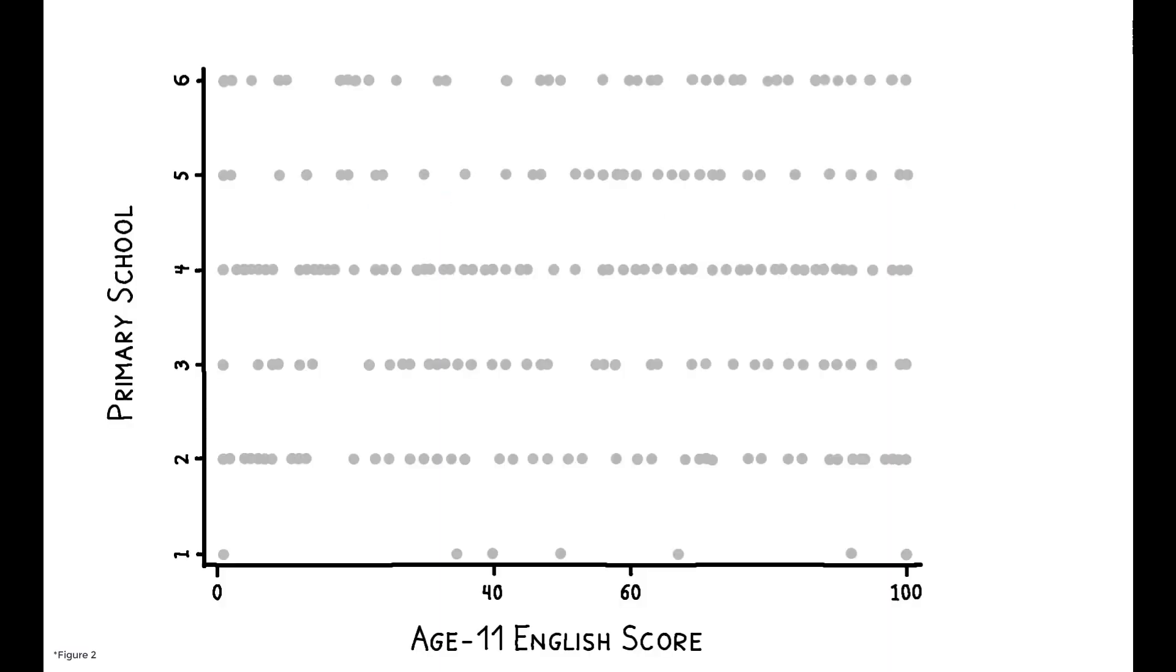This figure shows how this strategy translates to the actual data. These six primary school English classes have the same minimum, maximum, and mean test score in the age 11 English exam.